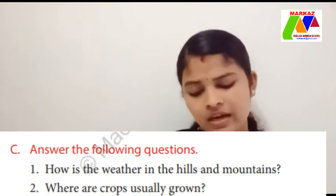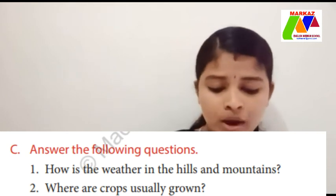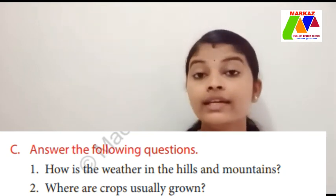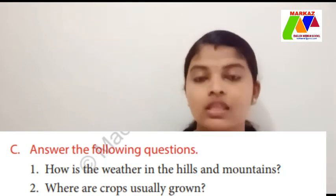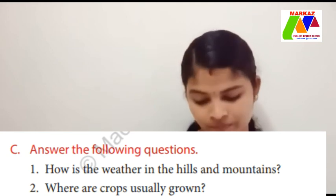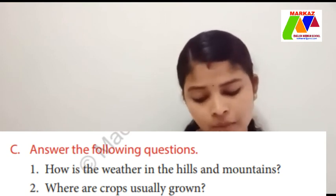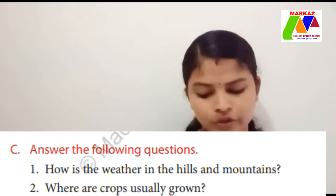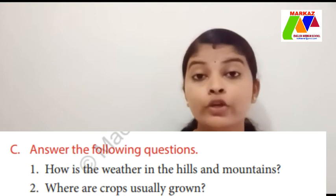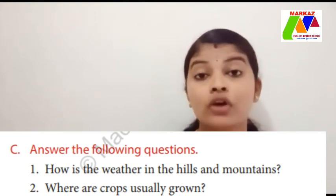Now C: Answer the following questions. The first one: 'How is the weather in the hills and mountains?' The weather in the hills and mountains is cold. Now the second one: 'Where are crops usually grown?' Crops are usually grown in plains.